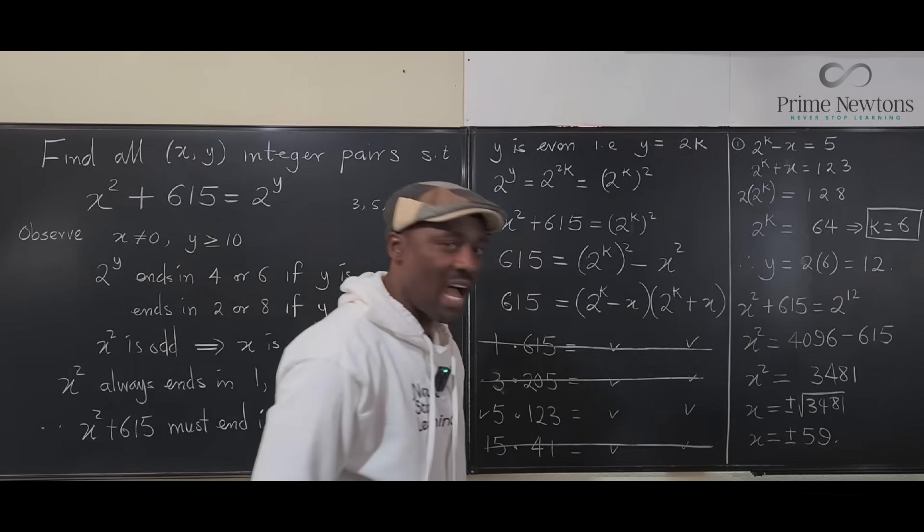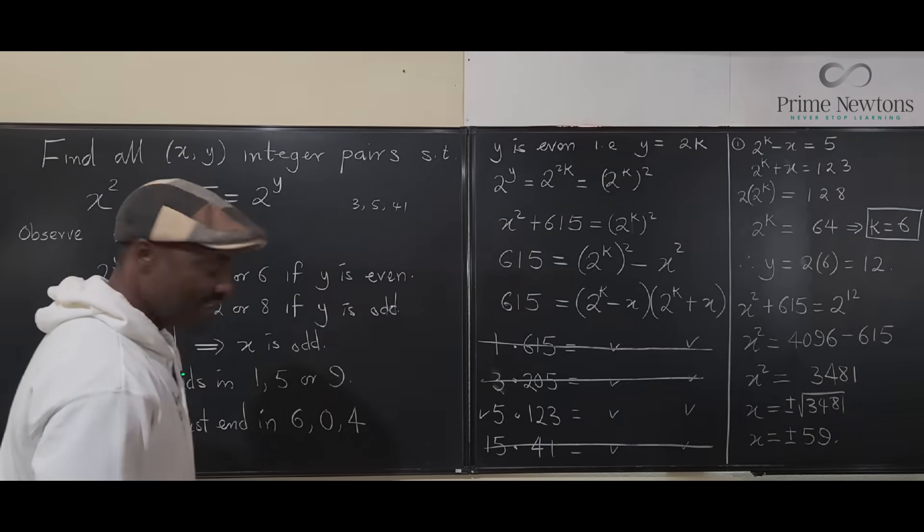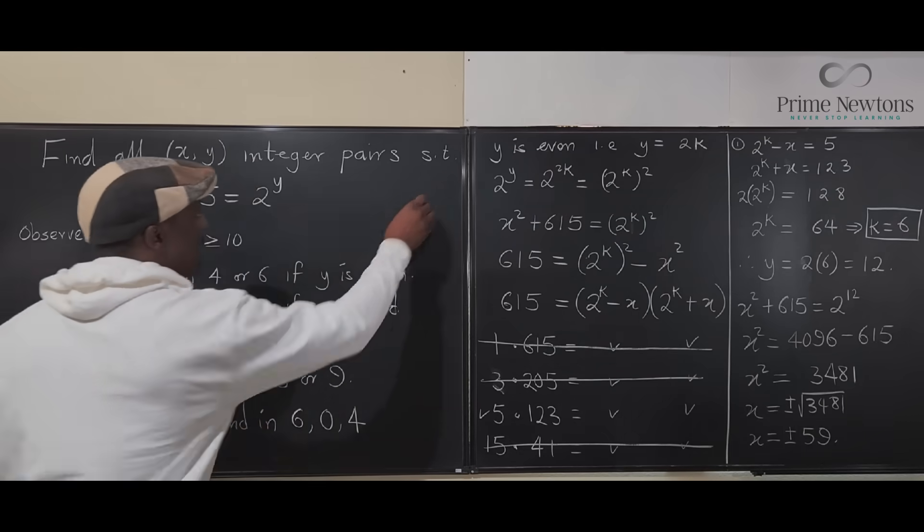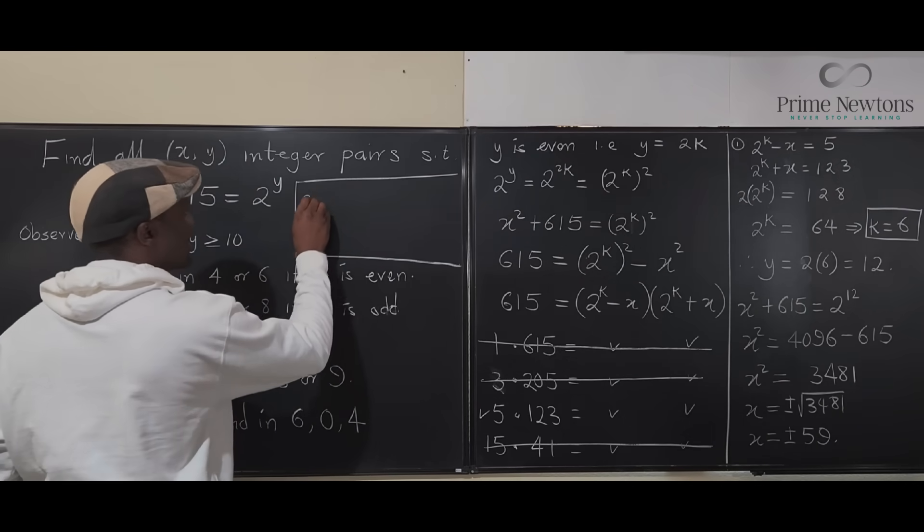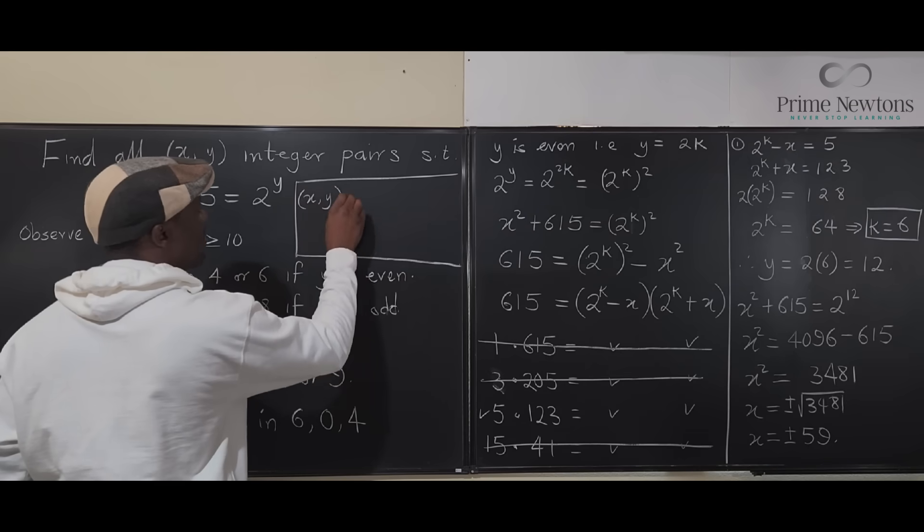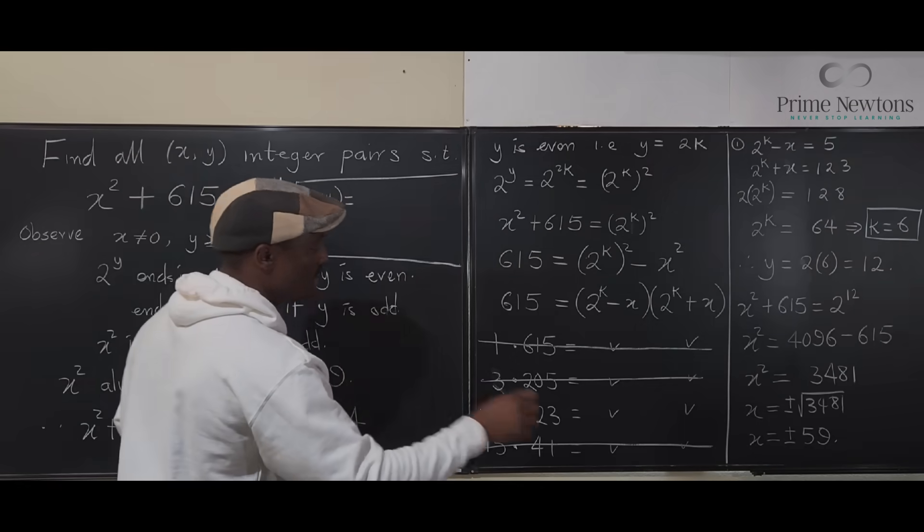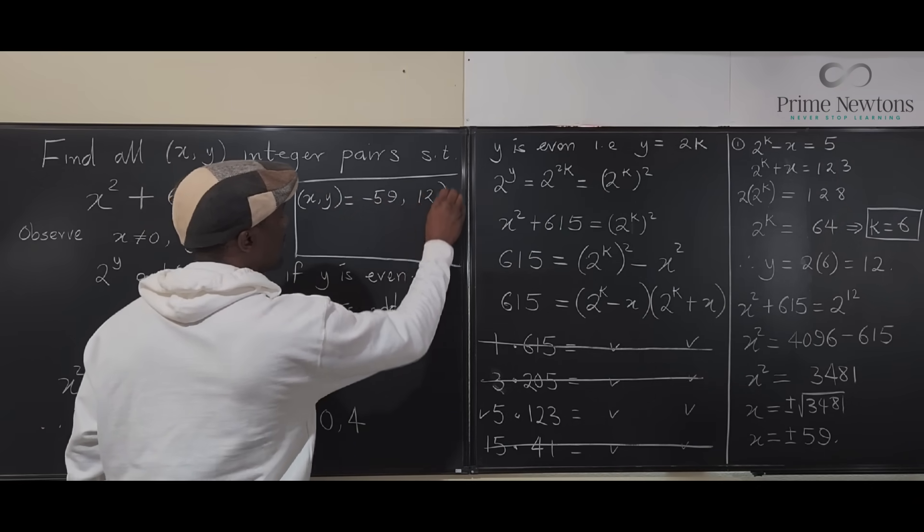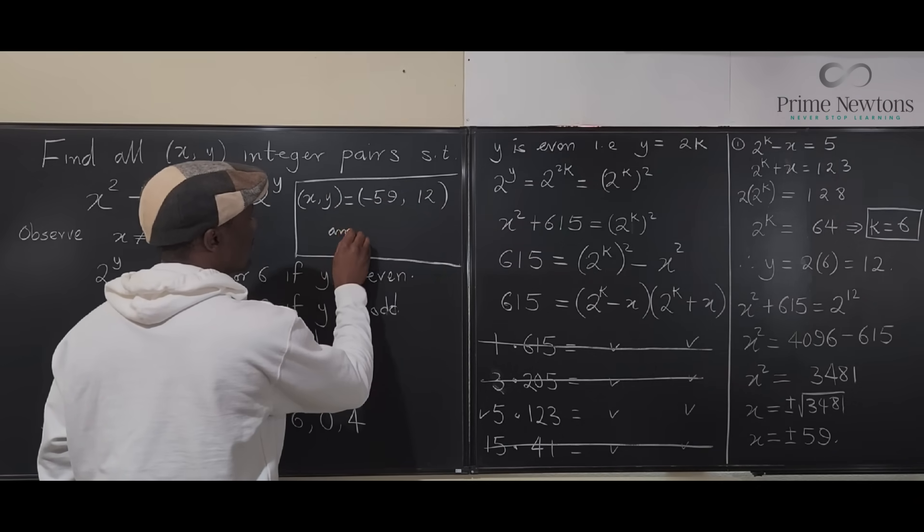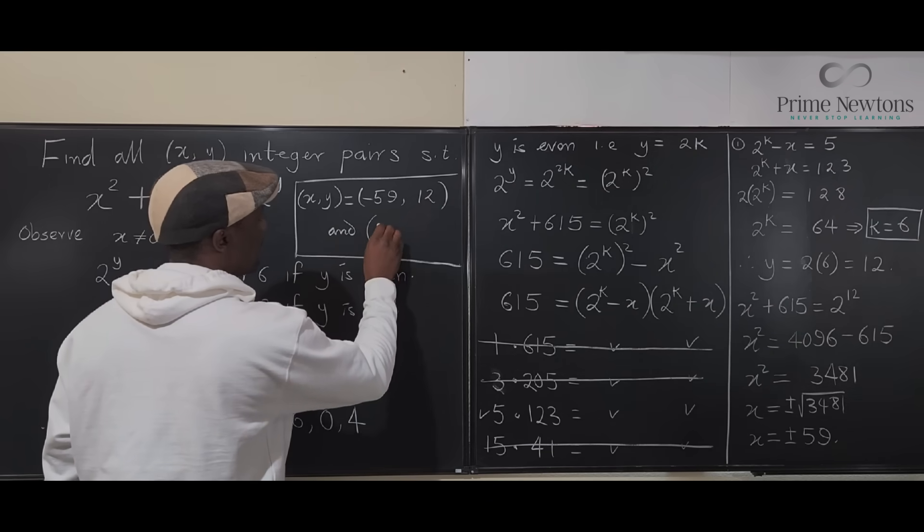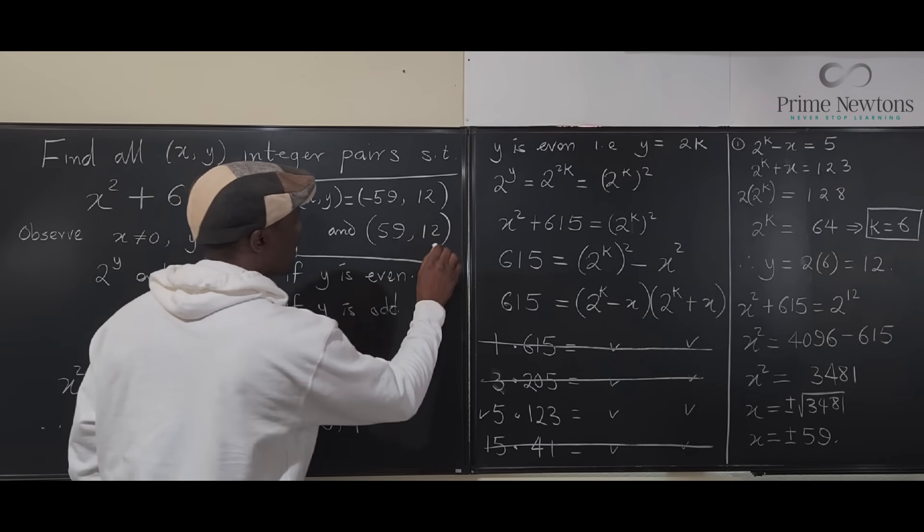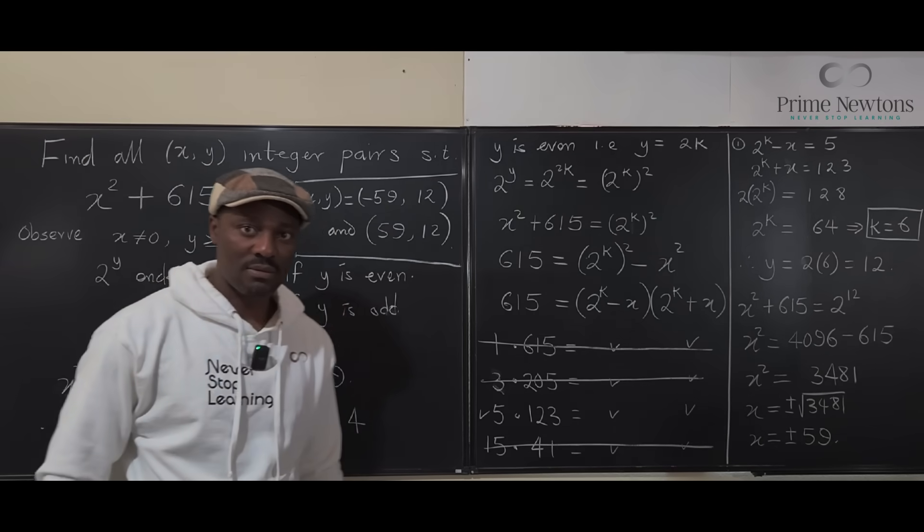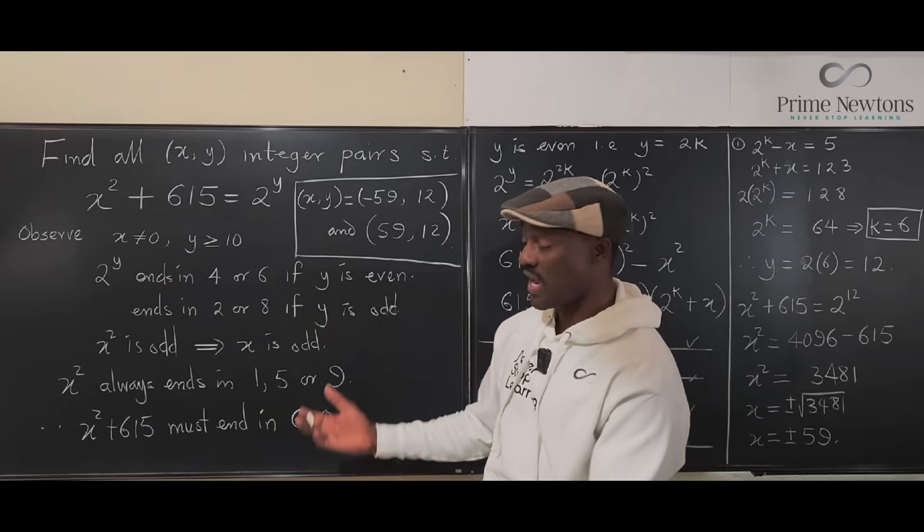So, we got our sets. I'm going to write the sets here. So, we know, based on what we have done, that (x, y) will be equal to (-59, 12) and (59, 12). Those are the two answers we're supposed to get and no other options because of all the restrictions we've created.